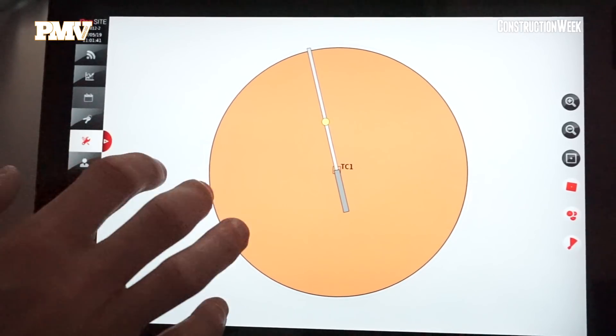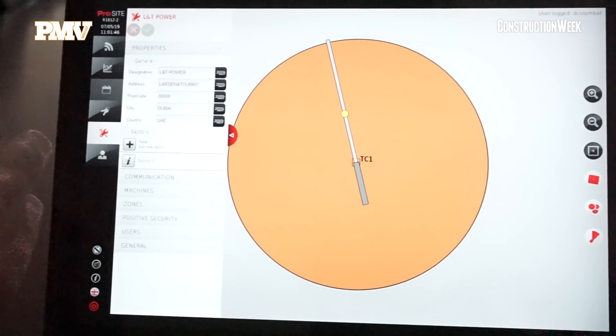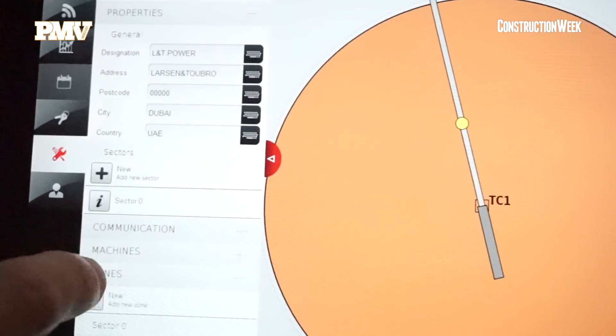So the user interface is very simple. There's different items with the property of the job site, the communication and so on. So I'm just going to go on zone.